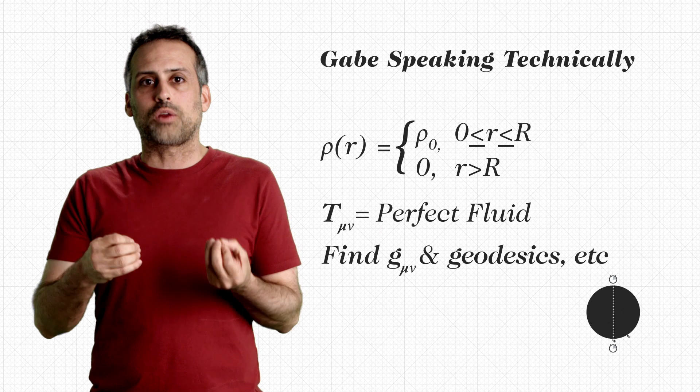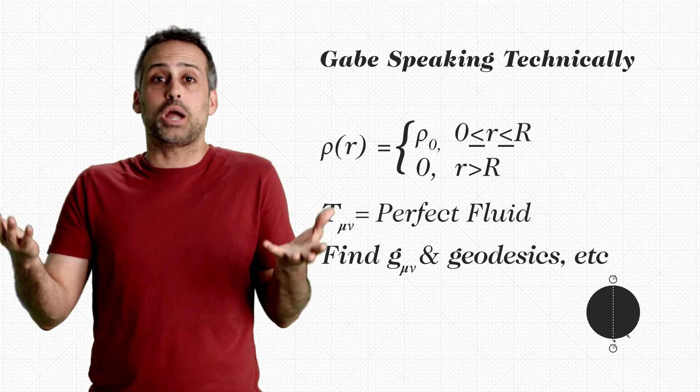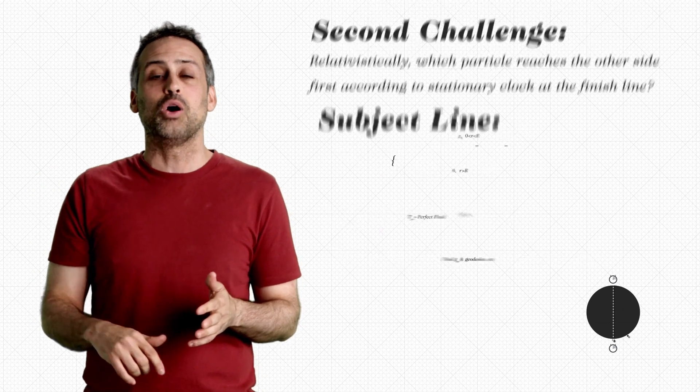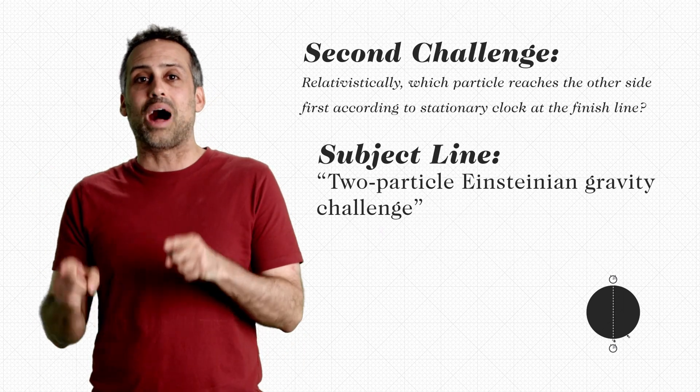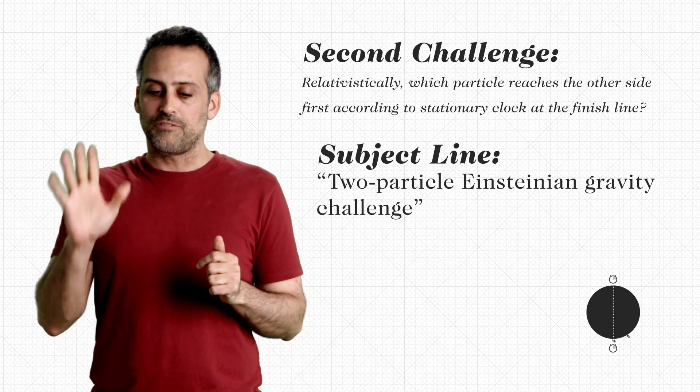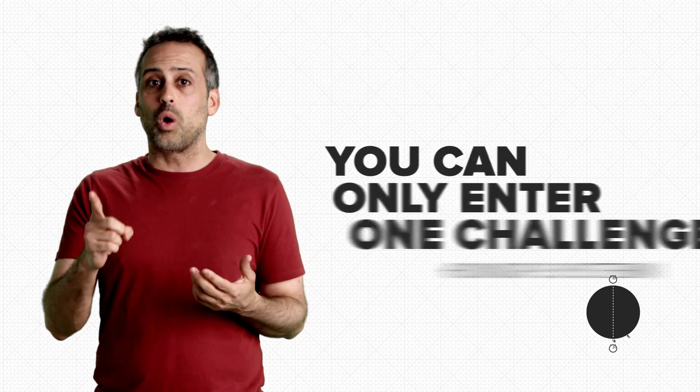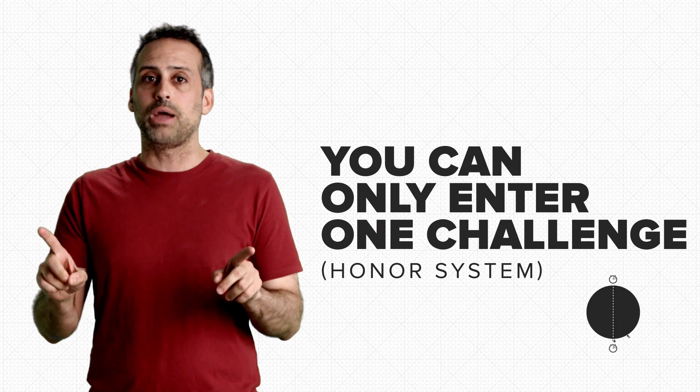Now, I've never actually worked this out, but you guys can do it. Why don't we have a second challenge? You can submit your answers to that challenge by email with the subject line, two particle Einsteinian gravity challenge. Five random people with correct answers and explanations will receive a t-shirt. You can only enter one challenge, though, Newton or Einstein. Pick one.